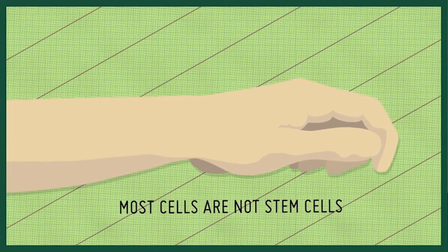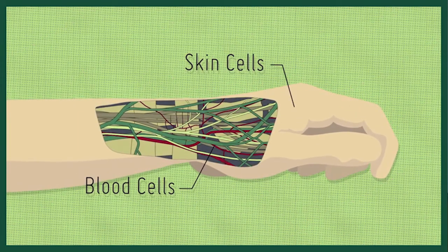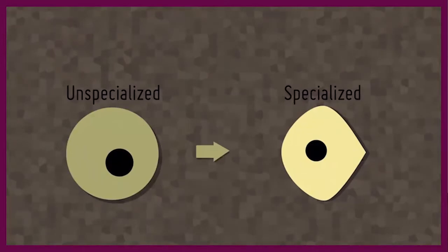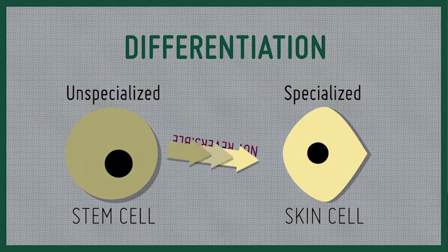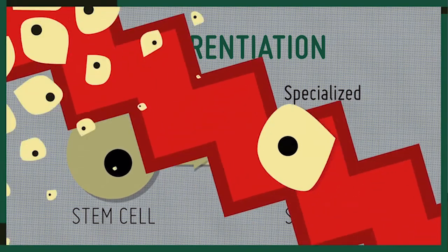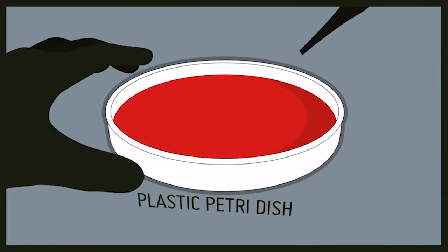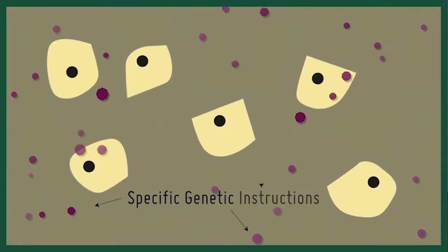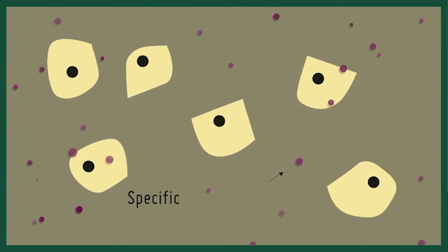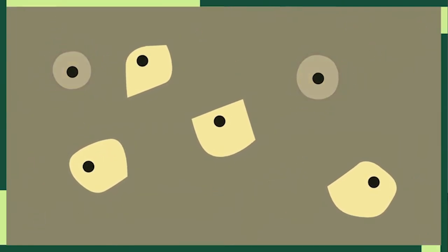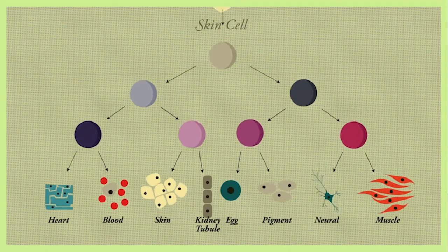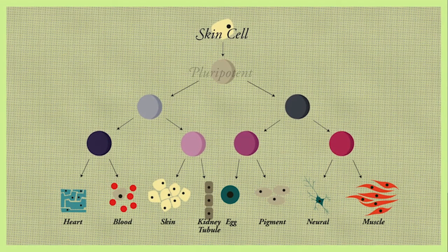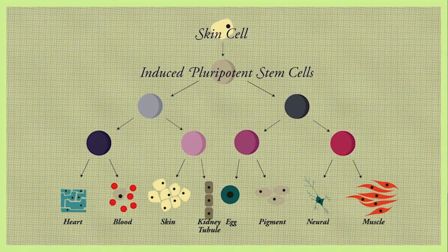Most of the cells in our bodies are not stem cells. For example, blood and skin cells have become specialized to perform a specific function in the body by a process known as differentiation that's normally not reversible. However, if some adult cell types are taken, grown in plastic dishes, and given specific genetic instructions, over time a small number of these cells will reverse from their differentiated state and develop the ability to re-differentiate into any cell type in the body. This newfound ability is known as pluripotency, and therefore these cells are known as induced pluripotent stem cells, or IPS.